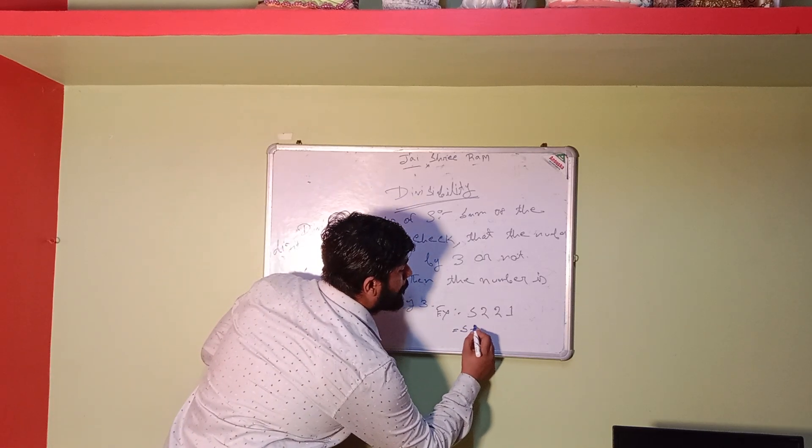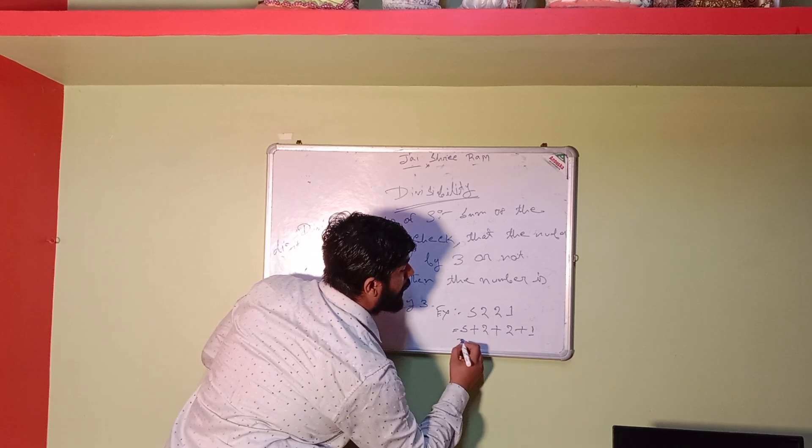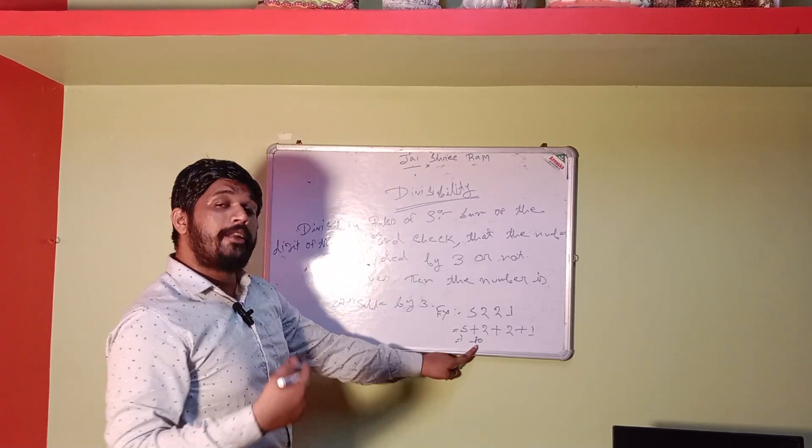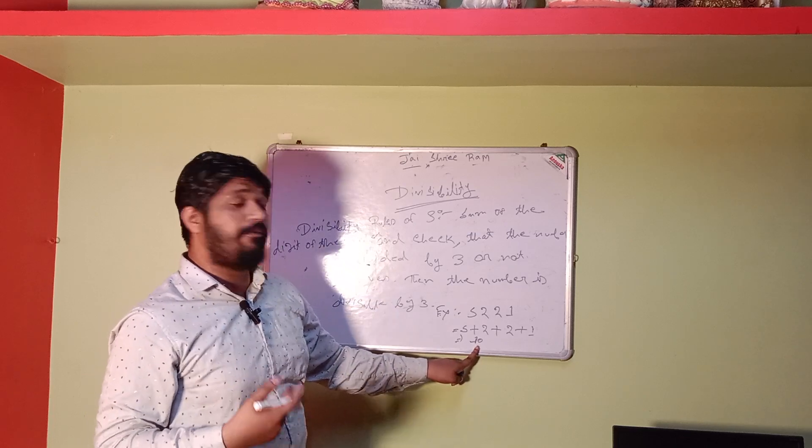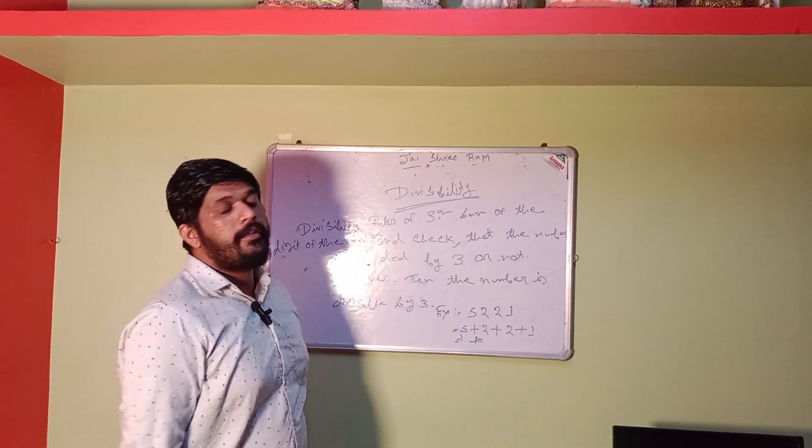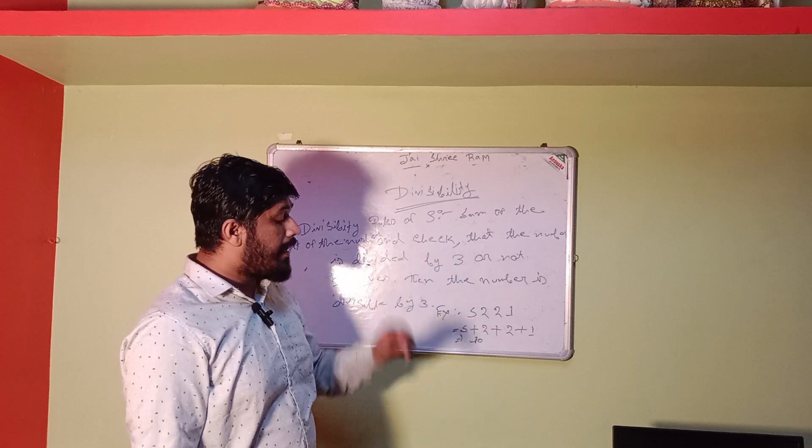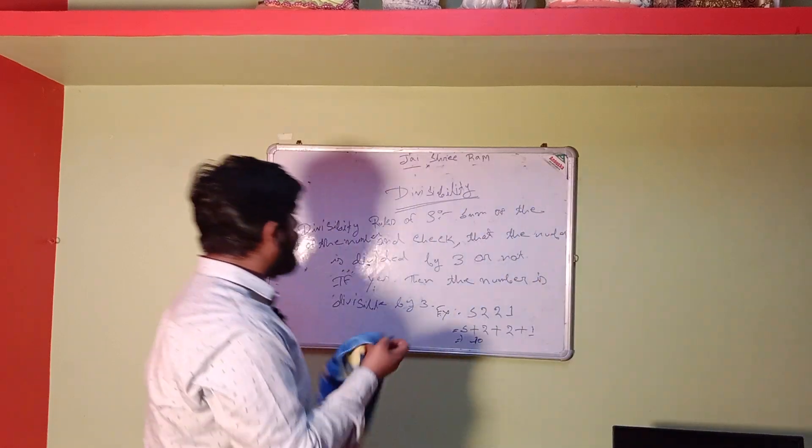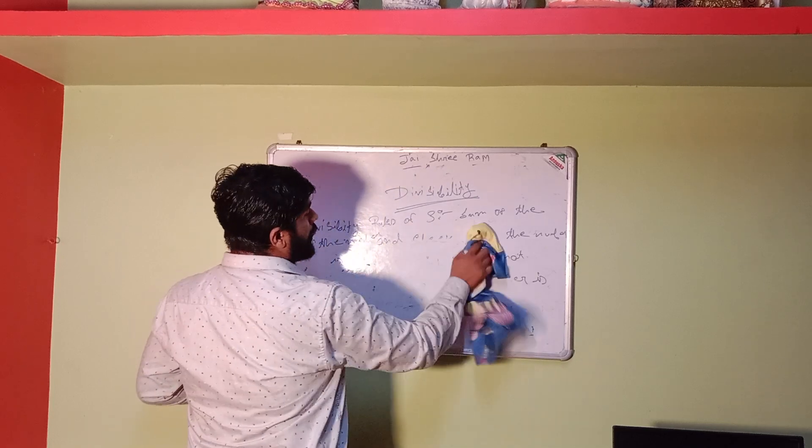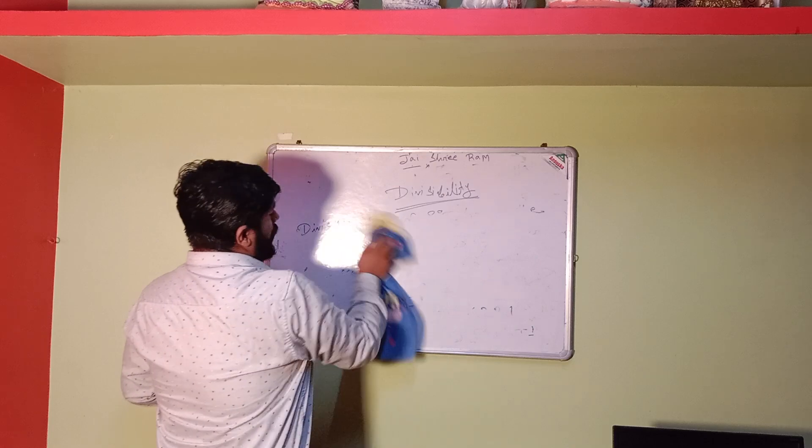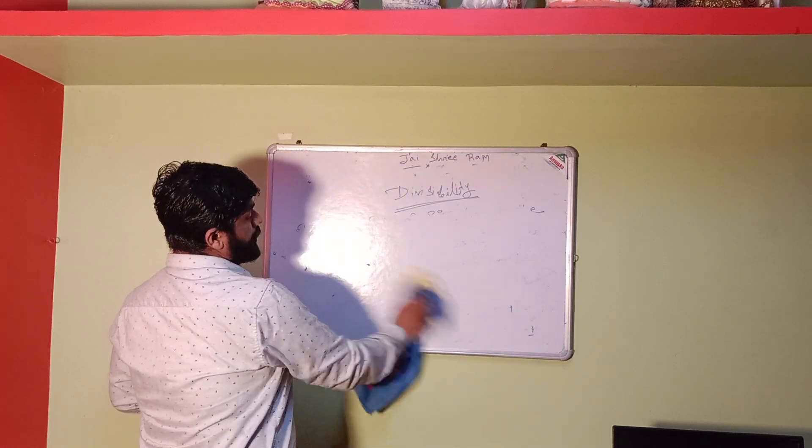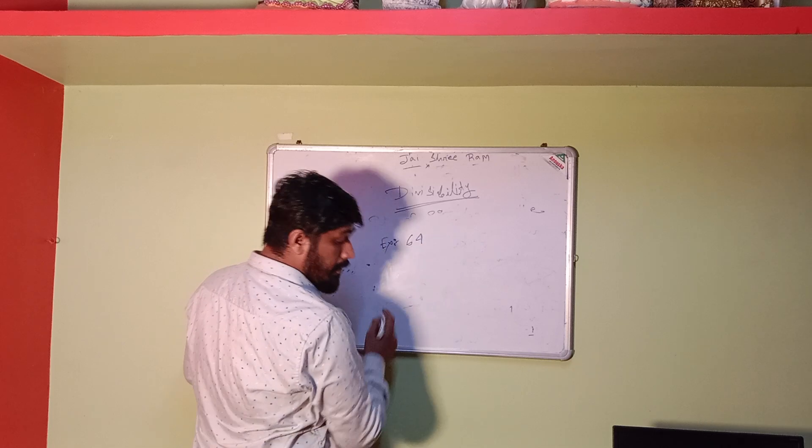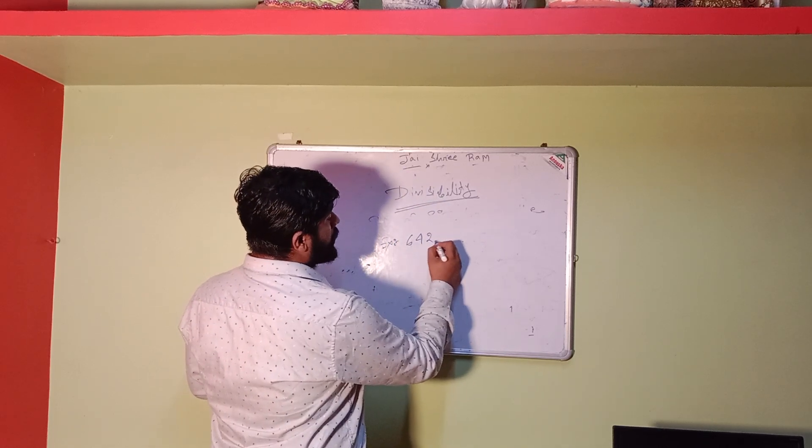First of all, 5 plus 2 plus 2 plus 1. What is the answer? 5 to 7, 7 to 9, 9 to 10. The answer is 10. Now 3 to the 3, 3 to the 6, 3 to the 9, 3 to the 12. So 10 cannot be. So this number cannot be divided by 3. One example.